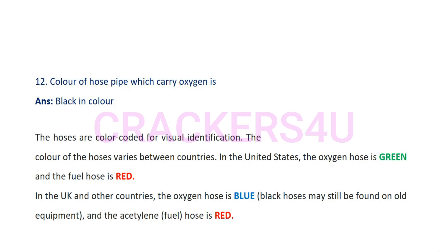In the UK and other countries, the oxygen hose is blue and the acetylene hose is red. Black hoses may still be found on old equipment. We should follow the textbook: oxygen is black in color and acetylene is maroon color.